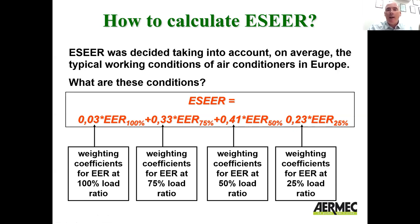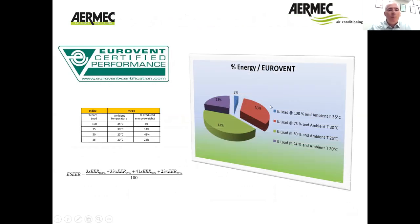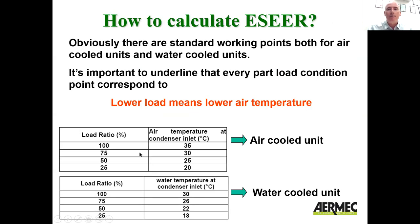By the way, IRMIC have all of their testing chambers — their climatic test chambers and acoustic test chambers — Eurovent certified. Just to show you here also: at 100% load, we assume the ambient is 35°C. At 75% load it's 30°C. As you can see, we assume that as the load drops, the ambient is dropping, for HVAC applications. If it's a water-cooled chiller, the temperatures being used are different, as you can see there.